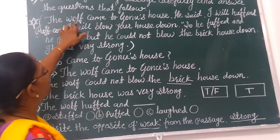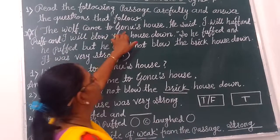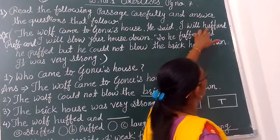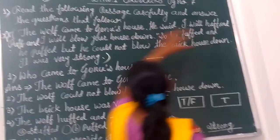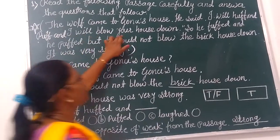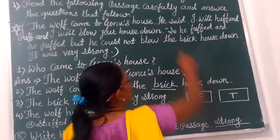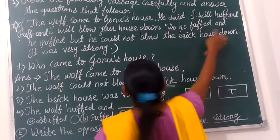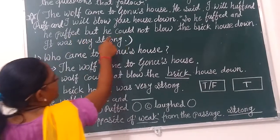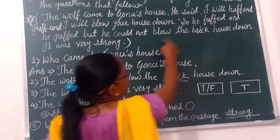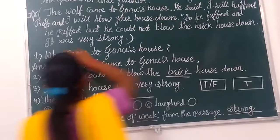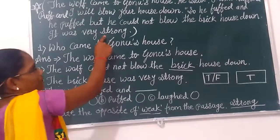The wolf came to Bono's house. He said, 'I will puff and puff and I will blow your house down.' So he puffed and he puffed, but he could not blow the brick house down. It was very strong.